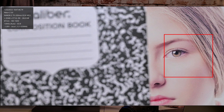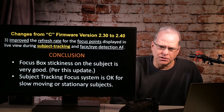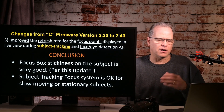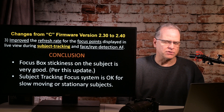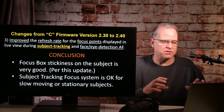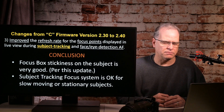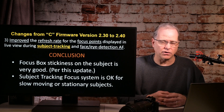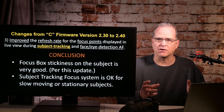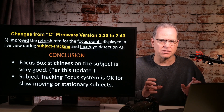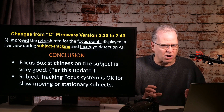Just to note — the box itself in terms of the update is great. The box is very, very sticky where it's supposed to be. Kudos to the Nikon box-drawing team; they're certainly doing a really good job. In conclusion on this last bit of the firmware update, for subject tracking, focus box stickiness to the subject is really, really good. Subject tracking continues to be really good for slow-moving or stationary objects.